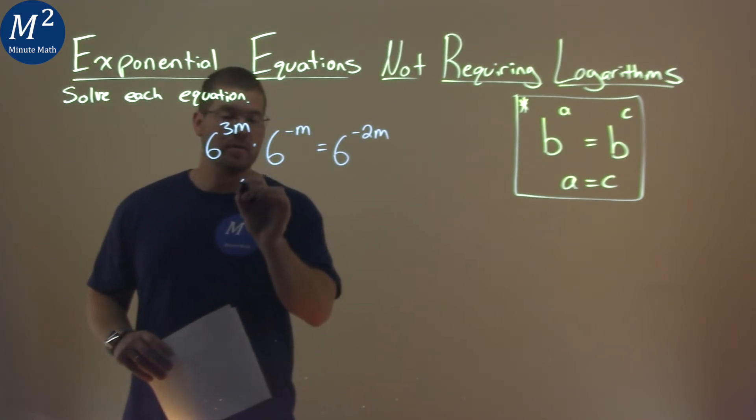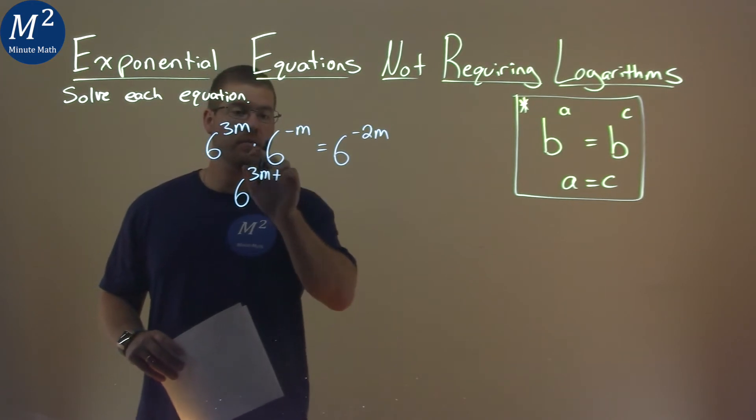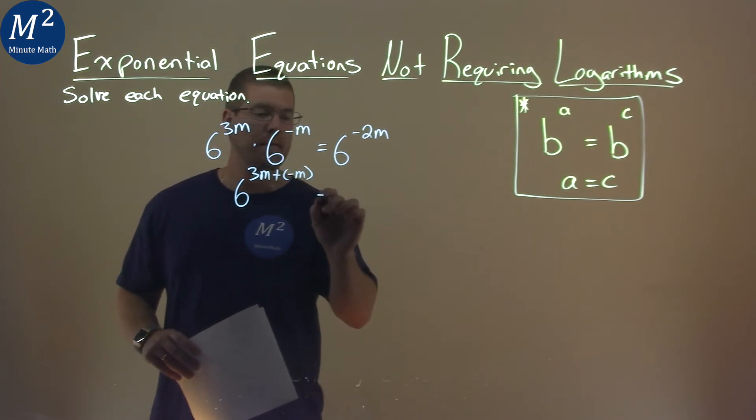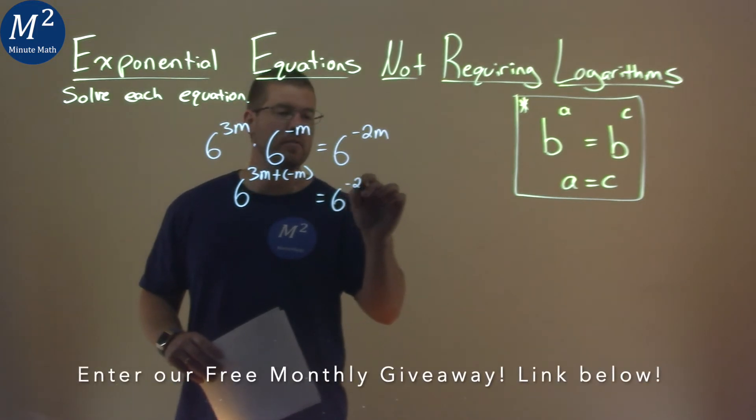We can rewrite this to be 6 to the power of 3m plus, because it's a multiplication here, a negative m, and that's equal to 6 to the negative 2m power.